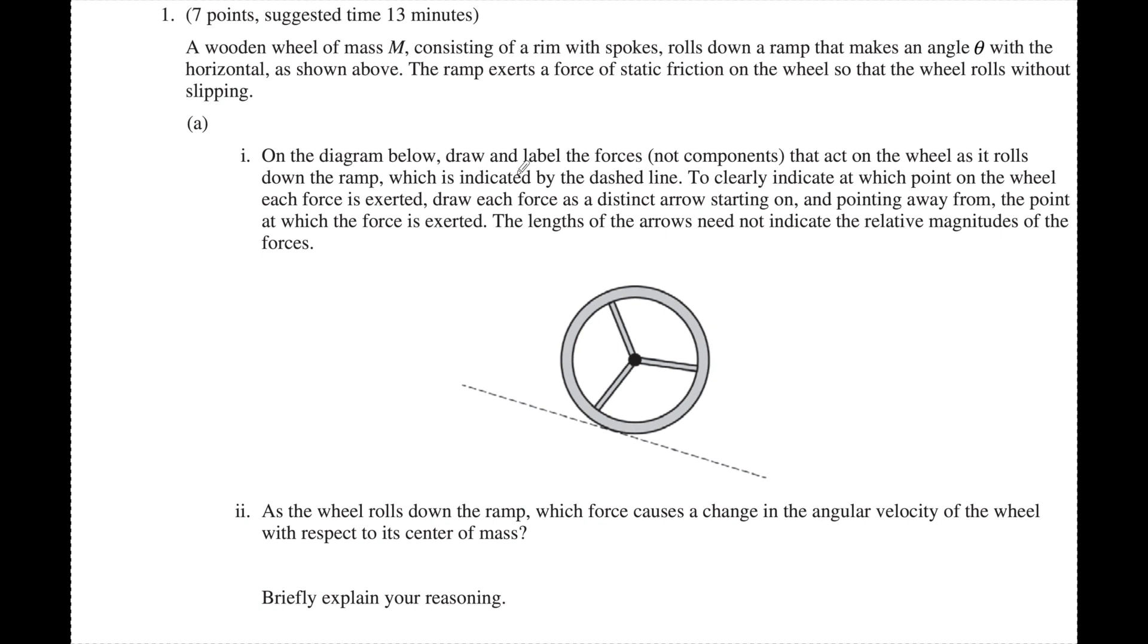For this first one, we're just going to draw a free body diagram, but we're not going to do components. That's really important. We're going to use the dotted line as the surface, which is great. Indicate what points in the wheel the force is exerted. This part right here burned some kids in 2016 because you had to draw the arrows from where the force was exerted. The lengths did not indicate the magnitude, so that's okay.